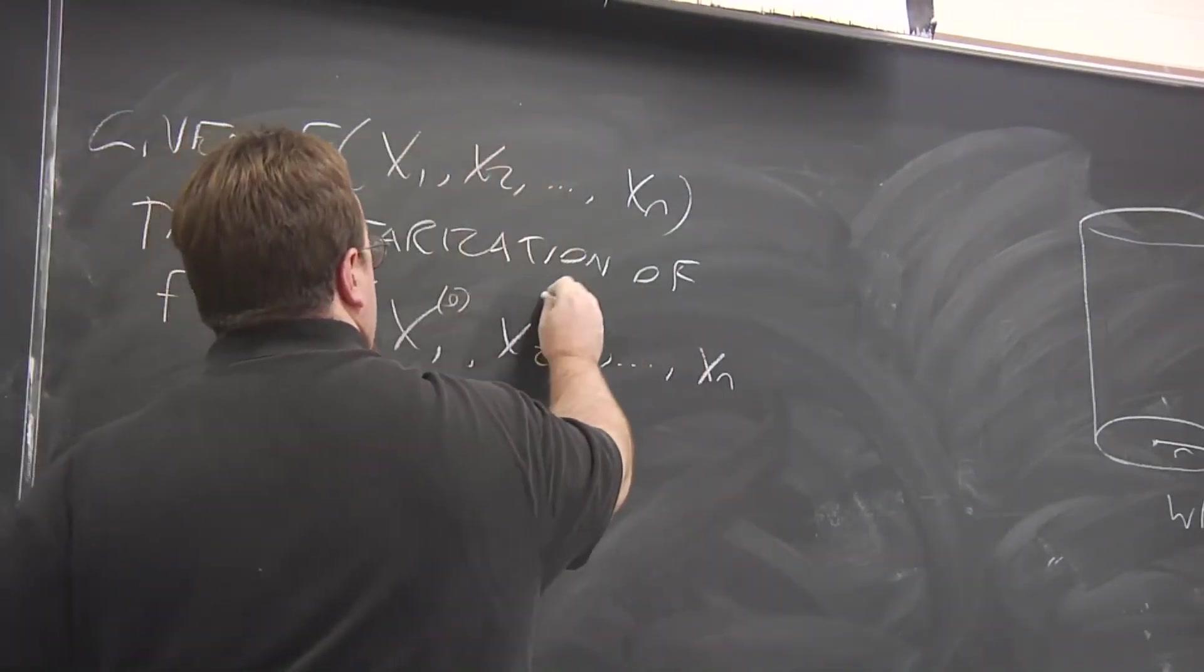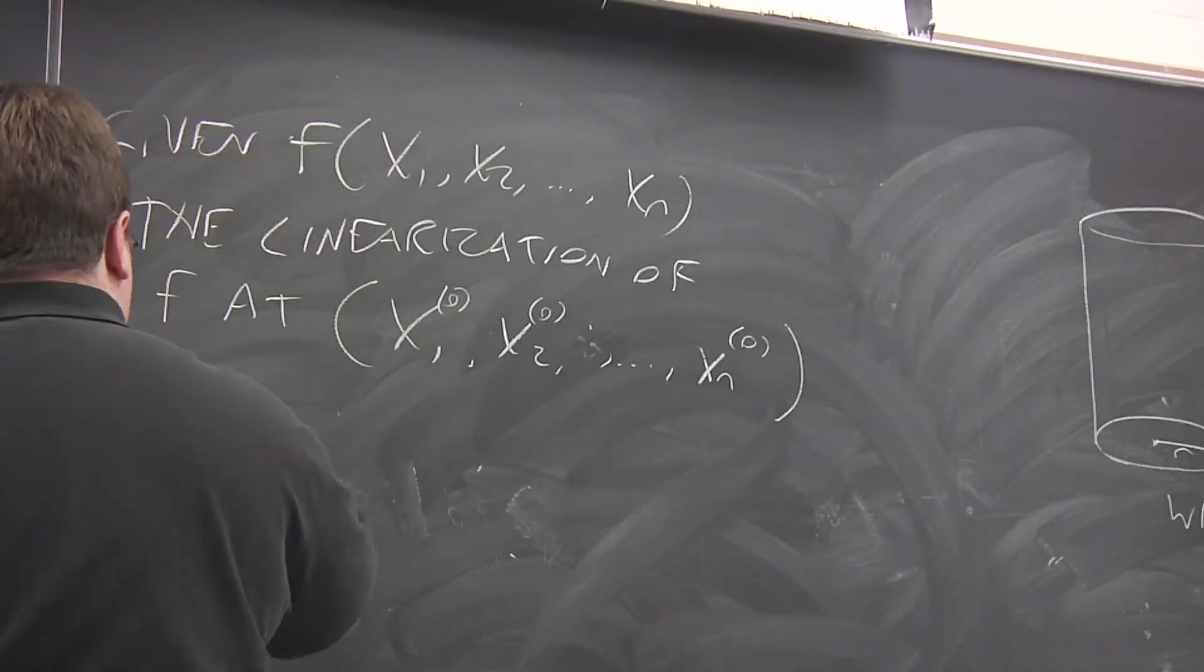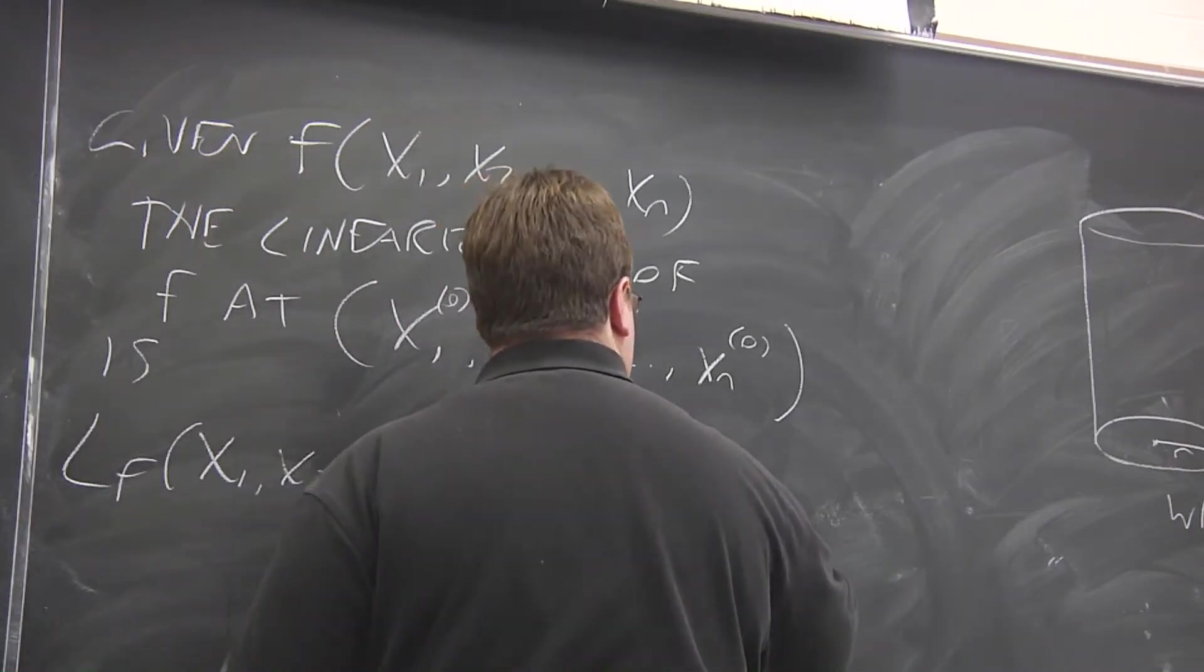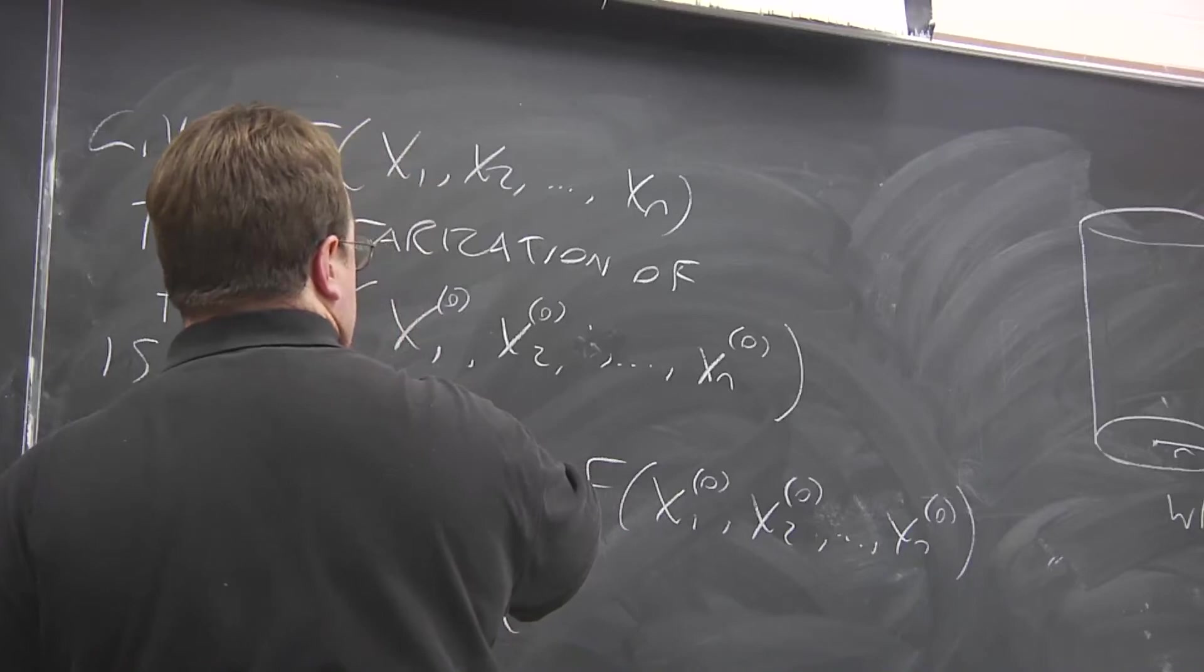Now to indicate this point, I'm going to put a superscript of 0. This is like our x naught y naught. We're linearizing around this point. It's this function. So it'll be the function value at that point plus partial derivative with respect to x₁.